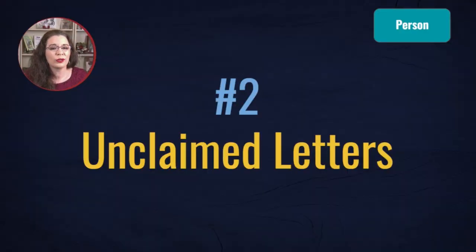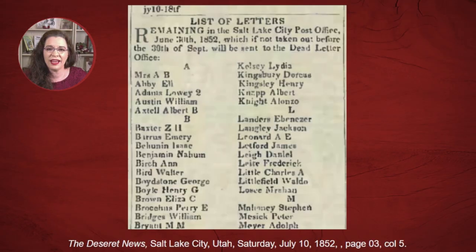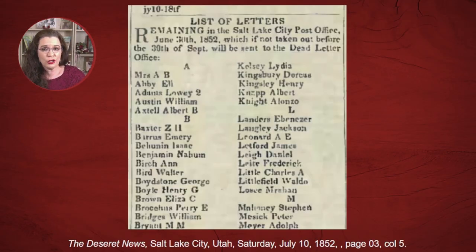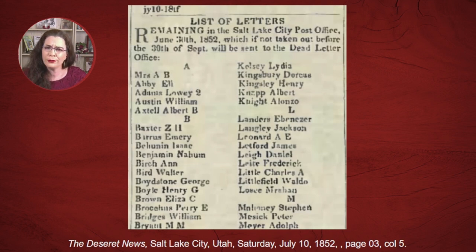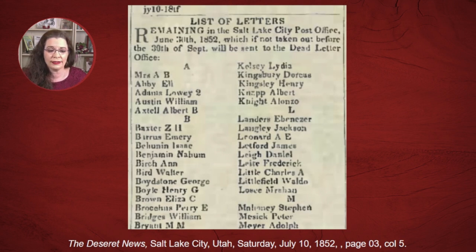Genealogy research is about placing your ancestors in a time and location. One favorite newspaper article of professional genealogists is the list of unclaimed letters. In many newspapers, particularly historic ones, the post office would list who has not picked up their letters and provide a date associated with this fact. So while you can't learn much about Dorcas Kingsbury, you know that someone thought she was living in Salt Lake City on the 3rd of June 1852.